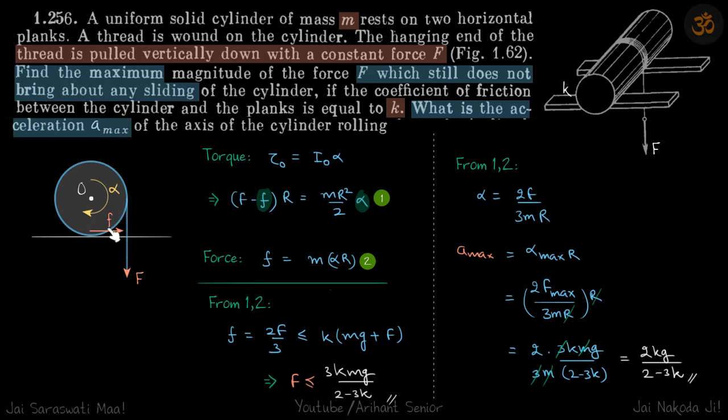And limiting frictional force will be k times that N. So this will give F ≤ 3kmg/(2 - 3k). This is the maximum value of force at which the rolling will occur.